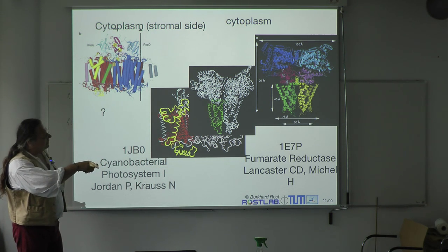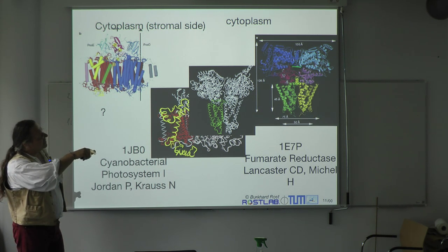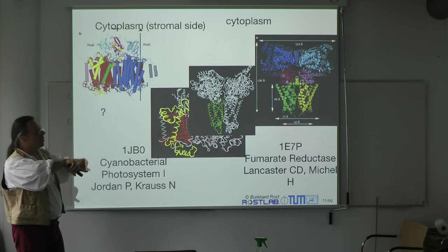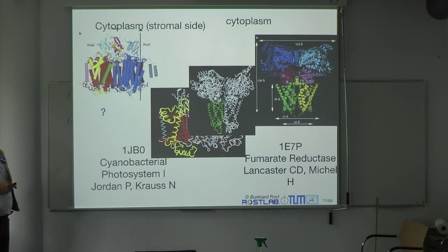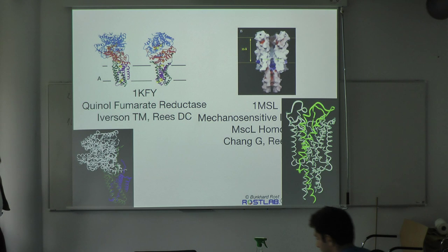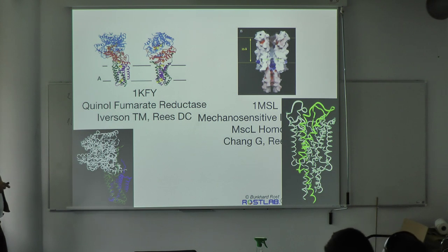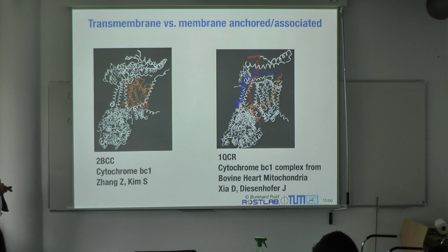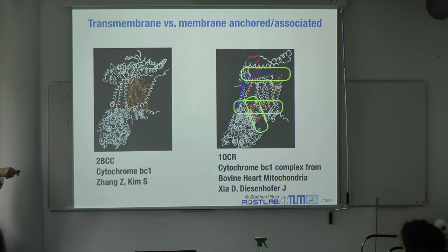Here is a case where we have a pore-like formation — a large construct that recognizes substrates and will sort of open or close. Here the lipid bilayer, and in this particular case the pore. Some of them are huge — the cytochrome shown here, the BC-complex. There are parts in the membrane and parts outside of the membrane.